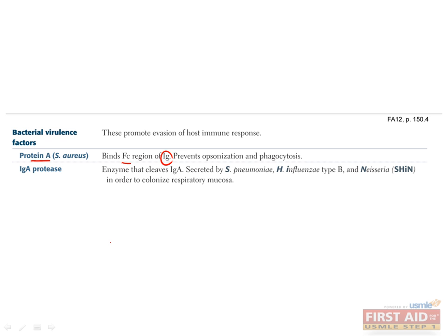Several organisms can cleave IgA antibodies using IgA proteases, which eliminate our primary antibody method of infection clearance in the respiratory tract. These organisms can be remembered by the SHIN mnemonic, which stands for Strep pneumoniae, H. influenzae type B, and Neisseria.